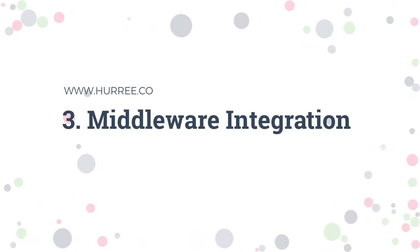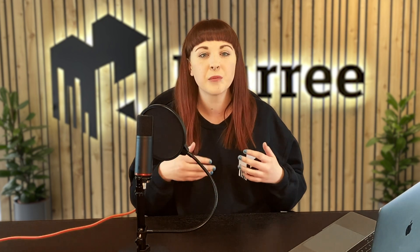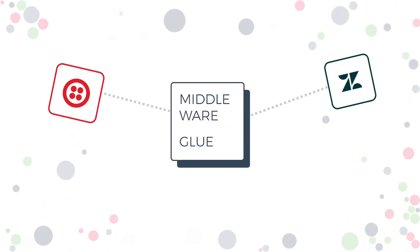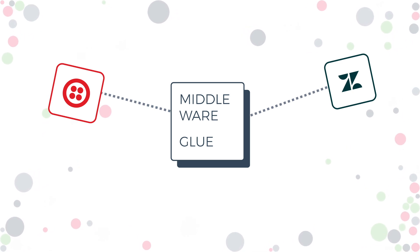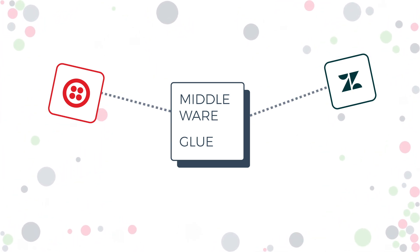Number three: middleware integration. Middleware integration creates a translation layer between software operating systems and the applications running on it. It's often referred to as a type of plumbing or glue that enables communication and data management for applications. Middleware integration is most commonly used to integrate legacy systems with newer web-based applications.